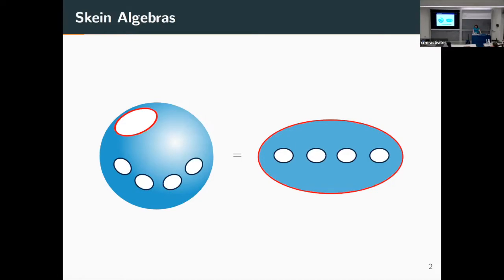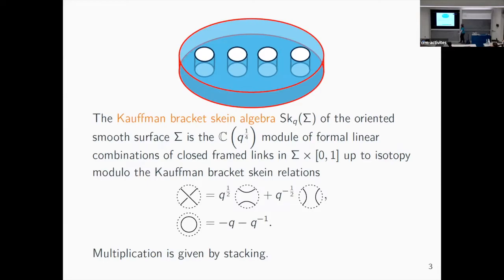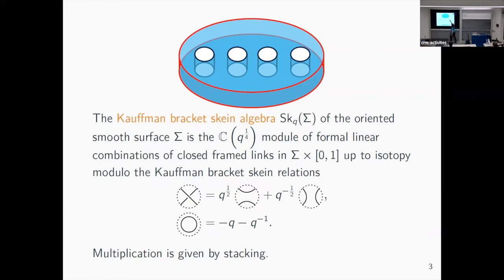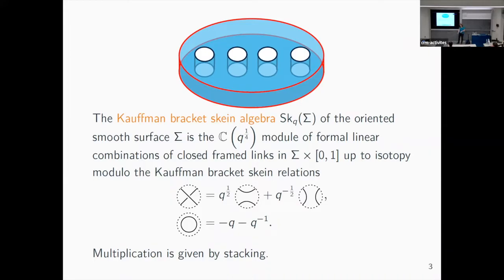The Kauffman bracket skein algebra: you take an oriented smooth surface like our punctured sphere, thicken it by crossing with the unit interval, and then consider formal linear combinations of framed links. The framing means you give a framing to every point — like little ribbons. Since we draw things flat on the page, we use the blackboard framing, so just assume the framing is parallel.